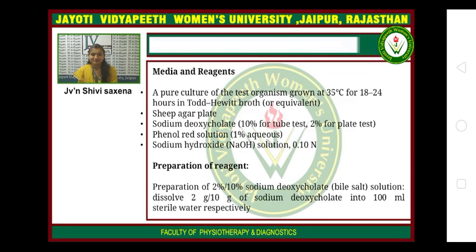Media and reagents: A pure culture of the test organism grown at 35°C for 18 to 24 hours in Todd-Hewitt broth or equivalent is required. Materials include a sheep blood agar plate, sodium deoxycholate 10% for the tube test and 2% for the plate test, phenol red solution 1%, and sodium hydroxide solution 0.1N.